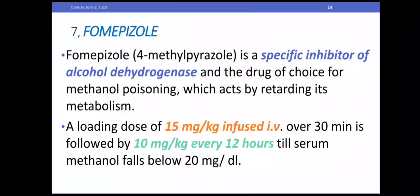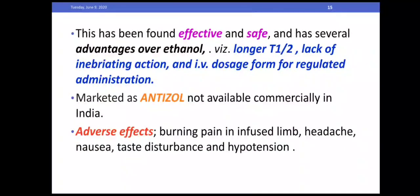Fomepizole is a specific inhibitor of alcohol dehydrogenase and the drug of choice for methanol poisoning, acting by retarding its metabolism. A loading dose of 15 mg per kg infused IV over 30 minutes is followed by 10 mg per kg every 12 hours, until serum methanol falls below 20 mg per deciliter. It has several advantages over ethanol: a longer half-life, lack of inebriating action, and an IV dosage form for regulated administration. Adverse effects include burning pain at the infusion site, headache, nausea, taste disturbance, and hypotension.